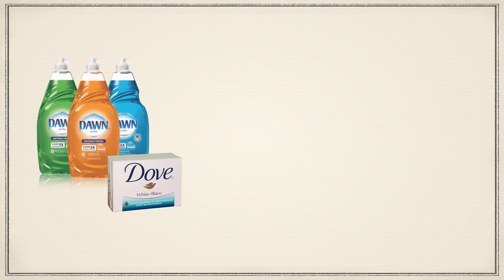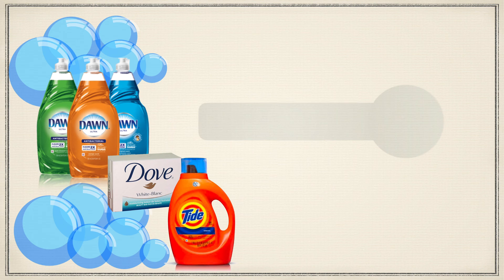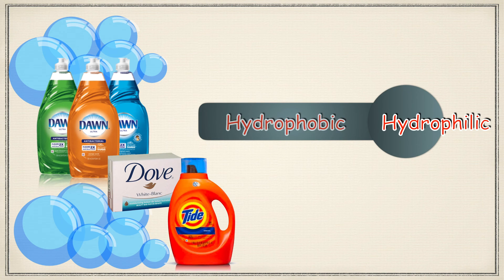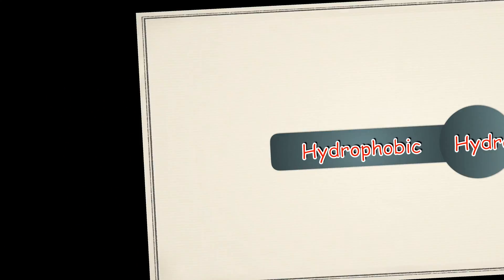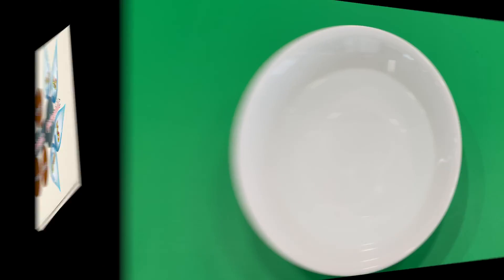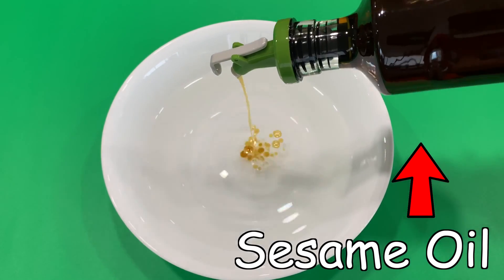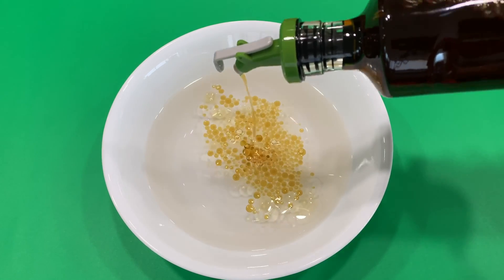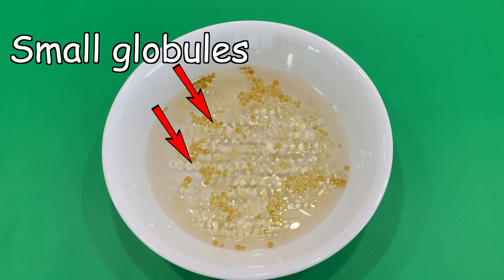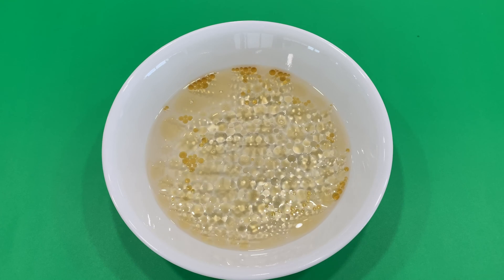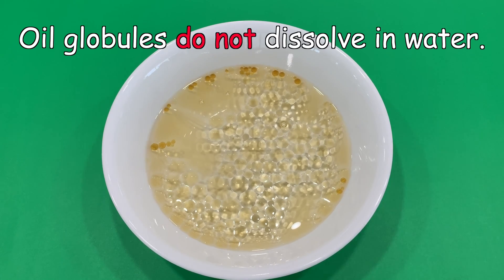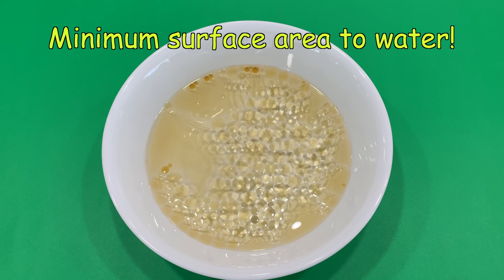We use soap or detergent almost every day. Detergent molecules have a hydrophilic head and a hydrophobic tail, allowing them to dissolve in both water and oil. For example, let's add some sesame oil to water. The oil floats over water and makes small globules; gradually, small globules fuse into big globules. Notice the oil globules do not dissolve in water — they stick together to have a minimum surface area.